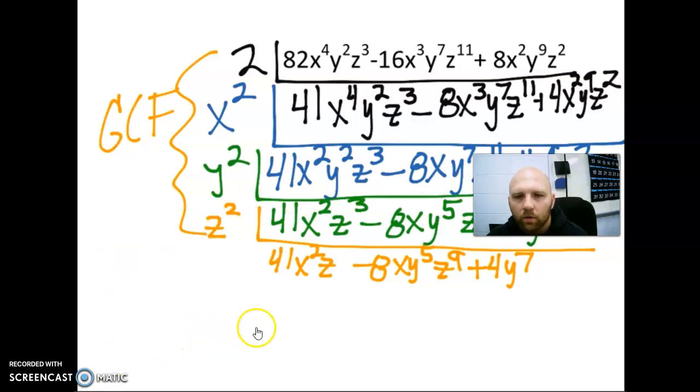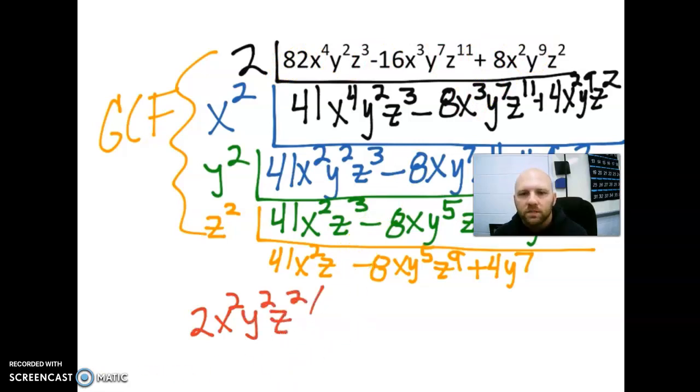The GCF goes outside our parentheses. So our original expression is equal to 2x²y²z² times (41x²z minus 8xy⁵z⁹ plus 4y⁷).